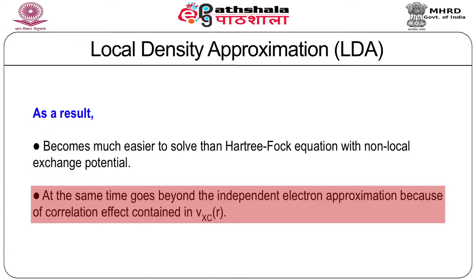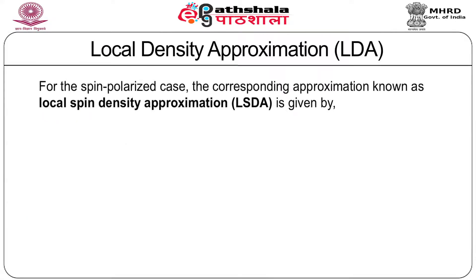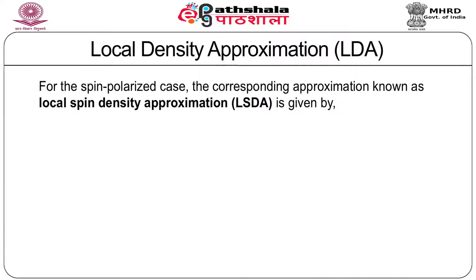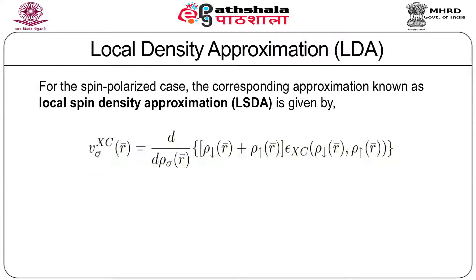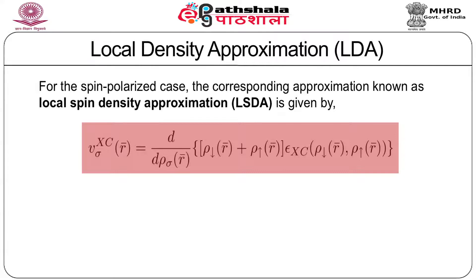At the same time, LDA goes beyond the independent electron approximation because of the correlation effect contained in V_xc. For the spin-polarized case, the corresponding approximation is known as the local spin density approximation, abbreviated as LSDA. It is given by an expression where the exchange correlation potential depends on the spin index sigma, and separately on the charge densities rho-up and rho-down in the up and down spin channels. Correspondingly, epsilon_xc also depends on rho-up and rho-down.